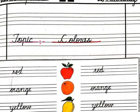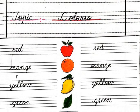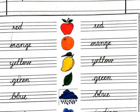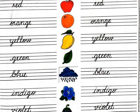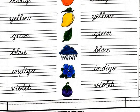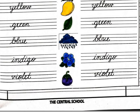Red color, orange, yellow, green, blue, indigo color, violet — purple shade.